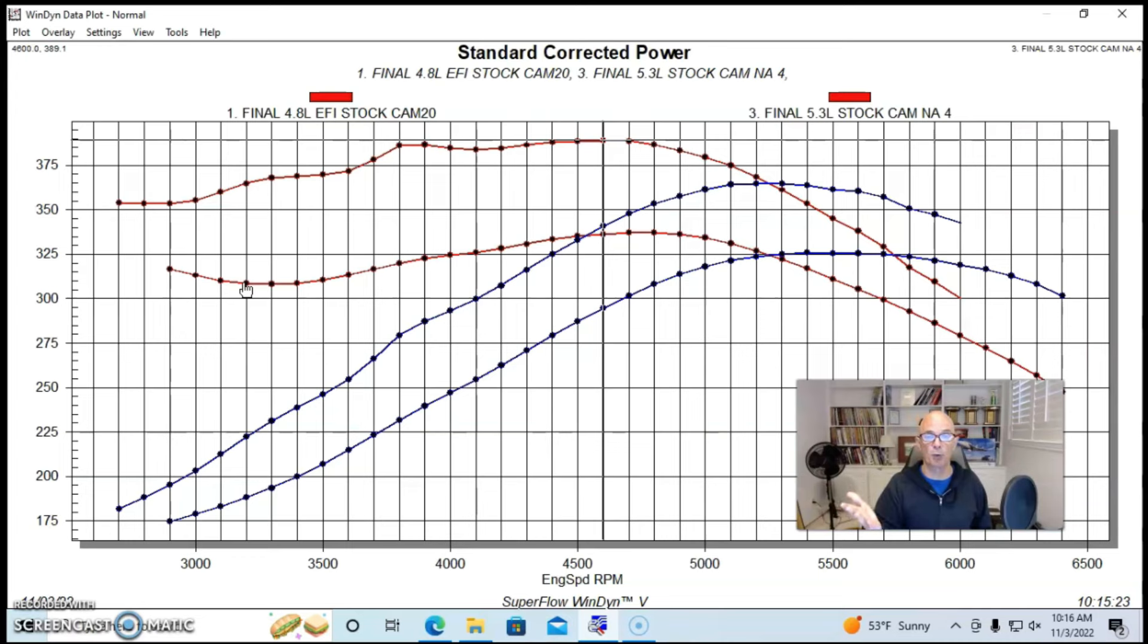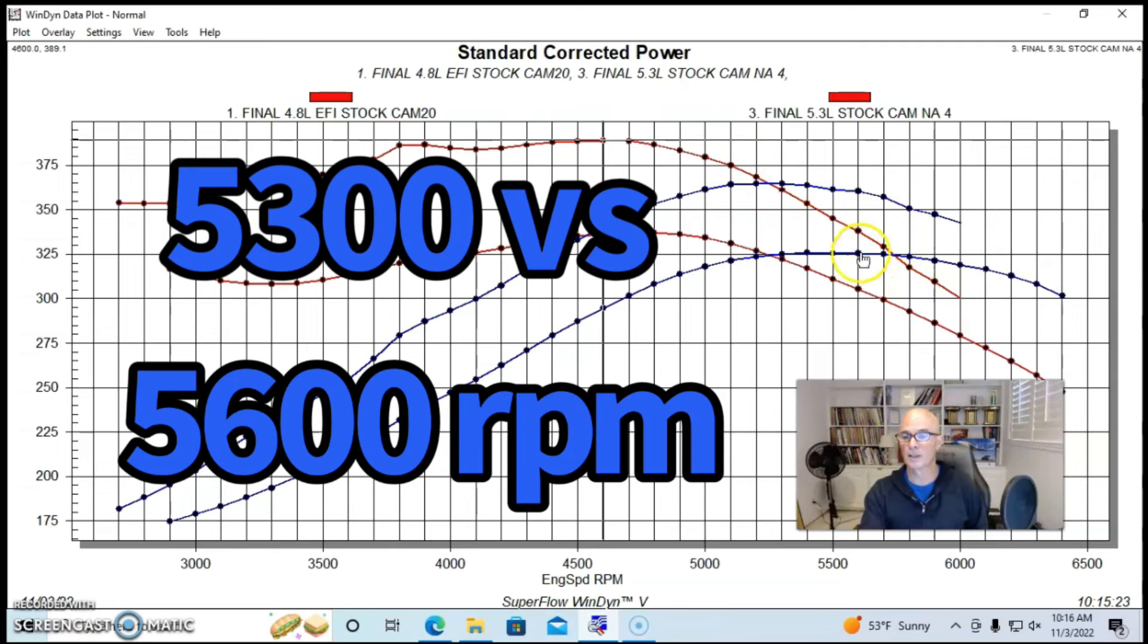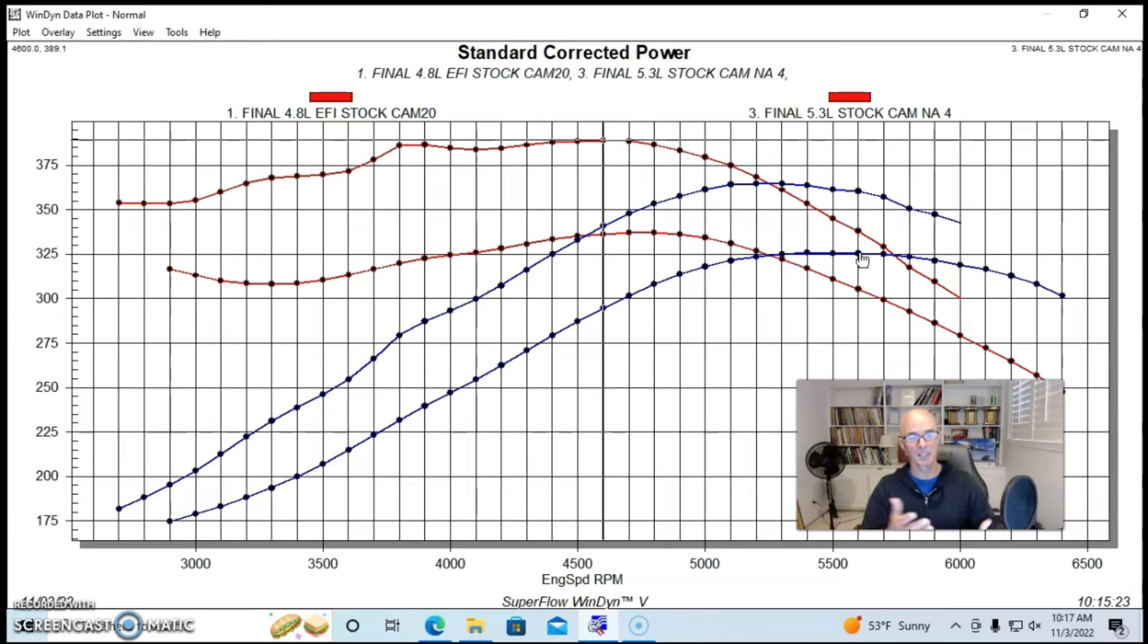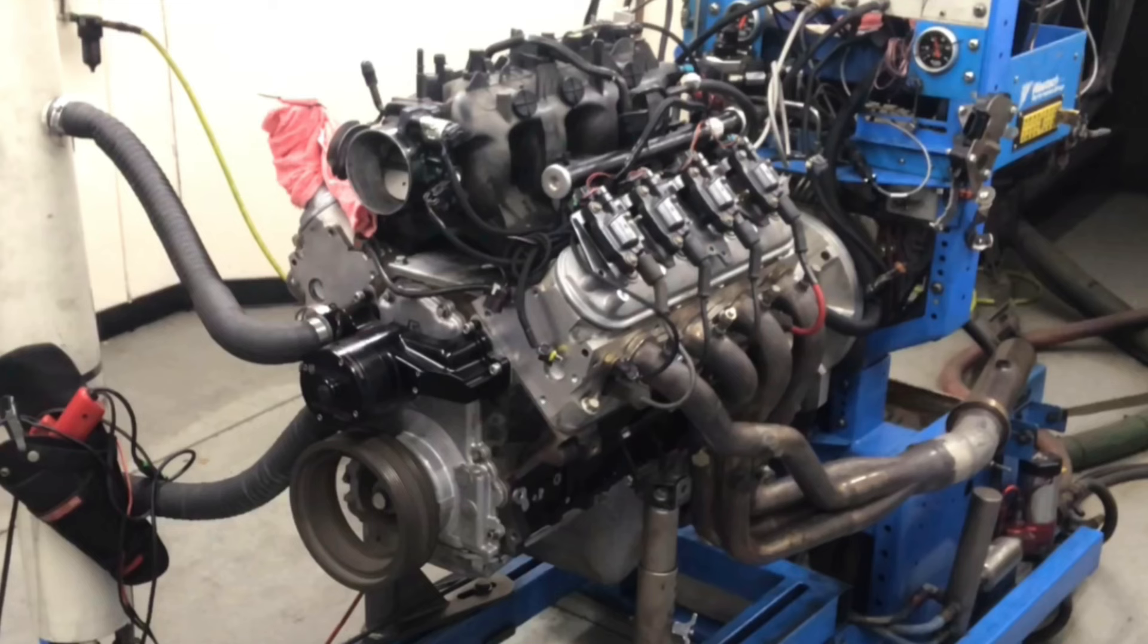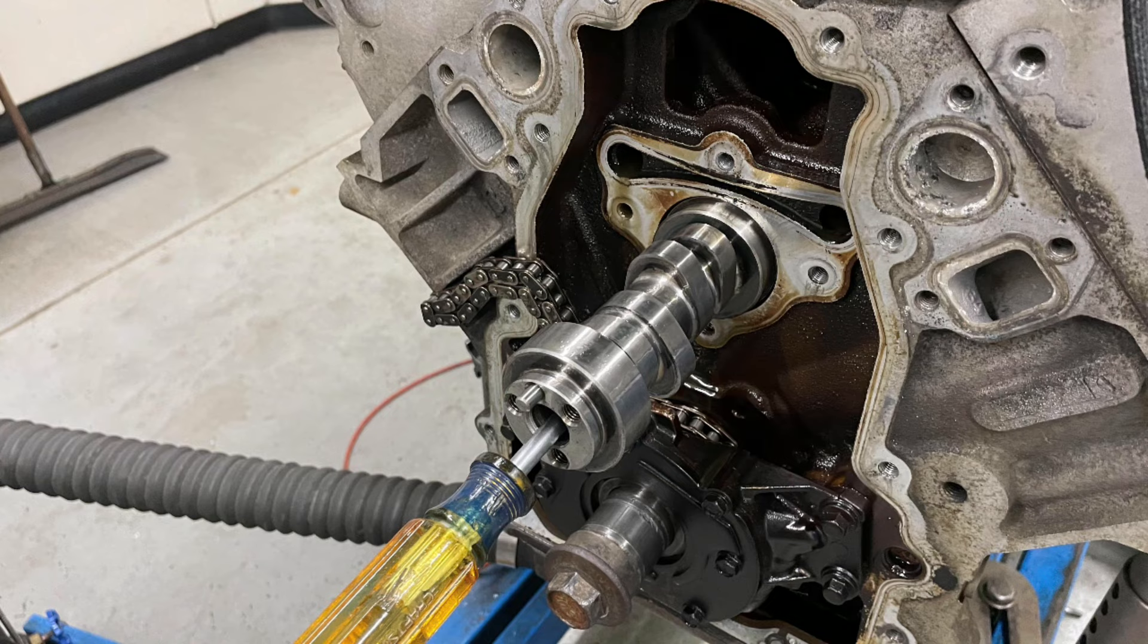The 5.3 makes more power than the 4.8 all the way through the RPM range. If we look up at the top of the curve, we see the 5.3 actually makes peak power at 5,300 RPM, where the smaller 4.8 liter with roughly the same combination makes peak power at 5,600 RPM. So either it likes to rev because it's a smaller stroke, or it has to rev because it's a smaller displacement, depending on which side of that argument you're on. The 4.8 liter actually likes to run or wants to run more engine speed. So you could offset some of this with gearing, but it's very important to note that the 4.8 in stock trim will always make less power than the 5.3 because the 5.3 is bigger.